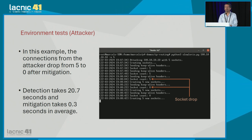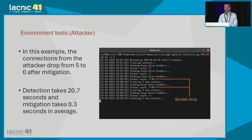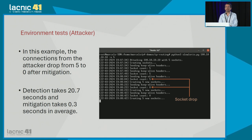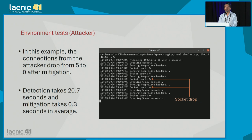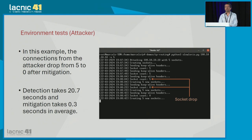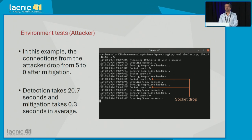Once three flows are identified as attacks, we proceed to mitigation. As you can see in this slide, the attacker that previously was carrying out five connections goes from five to zero — meaning the attacker is completely blocked. The detection and learning time for the three flows took 20 seconds, while mitigation only takes 0.3 seconds. Once the IDS determines it is an attack, the control plane receives the signal and in less than 0.3 seconds the IP is completely blocked.